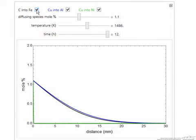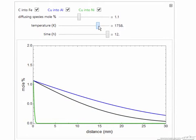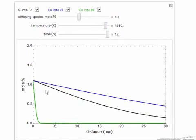In contrast, if I select carbon into iron, it's diffused almost as much as the copper and aluminum. If I raise the temperature, we see there is a difference, and at the very highest temperatures, we see some diffusion of copper into nickel.